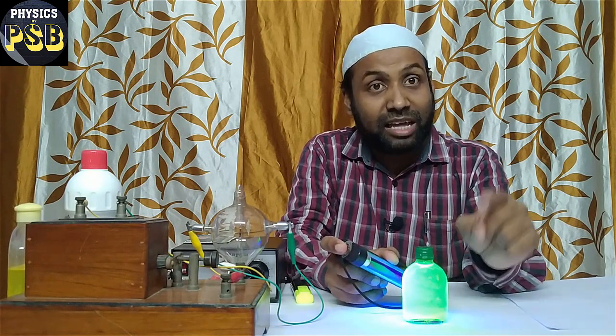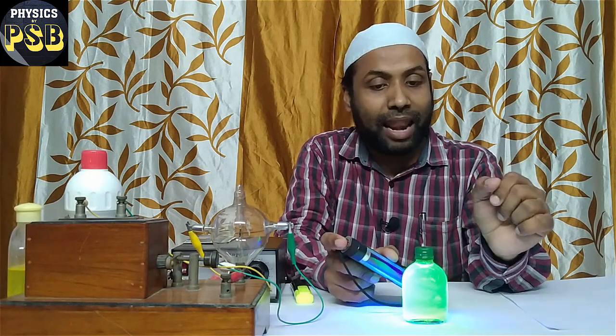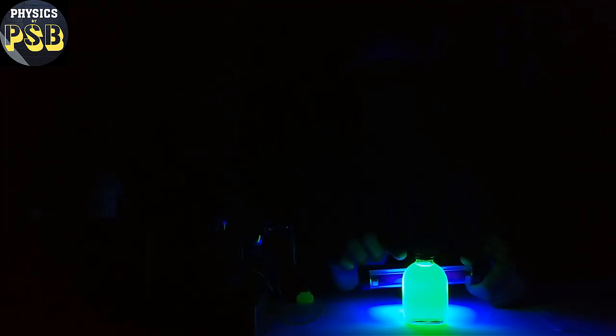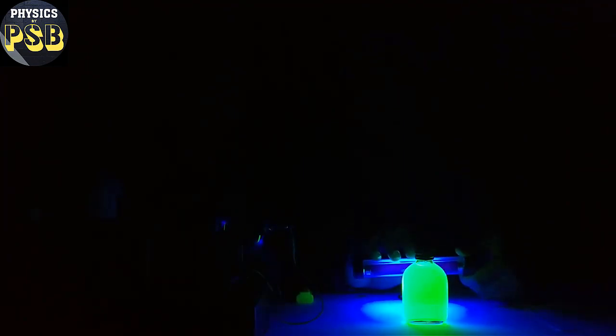For better visibility I will switch off the lamp. See, when no light is falling on this it is not glowing. When I make UV light fall on this, you can observe how it glows — it is due to fluorescence.